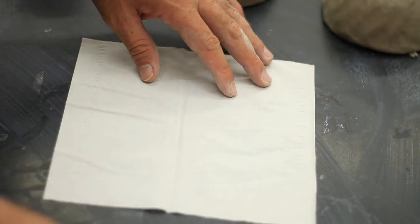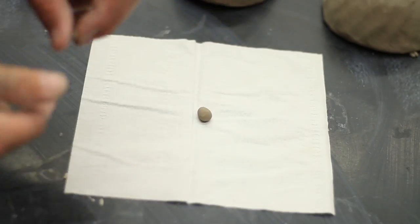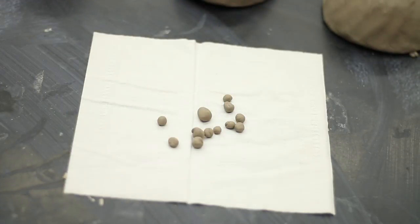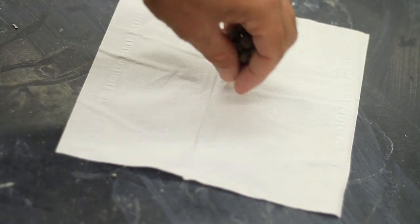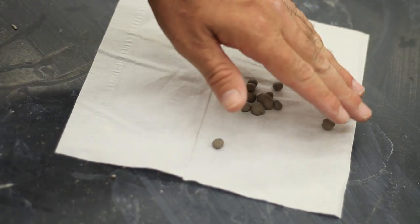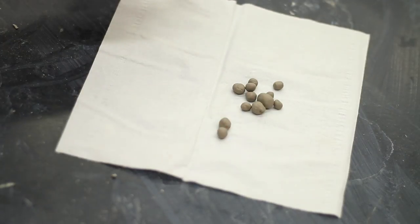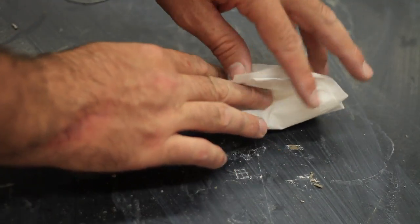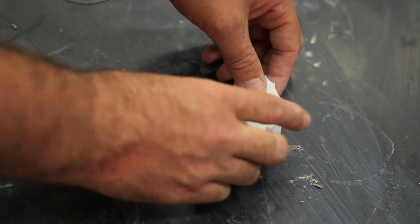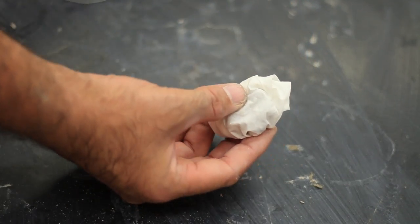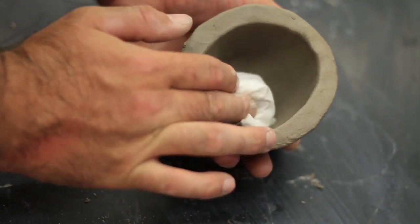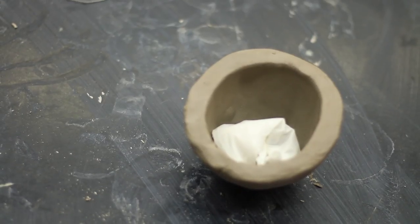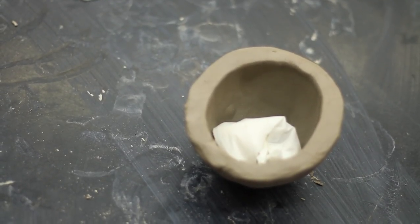Now that you have two matching pinch pots, you're going to roll out 10 to 20 pea-sized pieces of clay and set them aside to get leather hard or bone dry. These are going to make our organic forms rattle. Once your clay beads have dried to the leather hard or bone dry stage, you're going to wrap them in either a tissue or a couple squares of toilet paper. This will keep them from sticking to the slip or to the wet clay inside of your pinch pot. Place them in one half of the pinch pot now, or wait until after you've scored and slipped it.